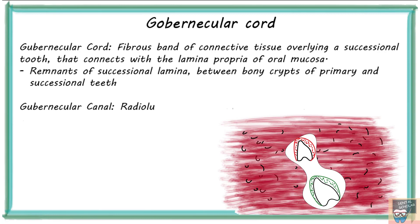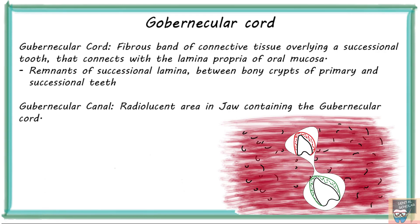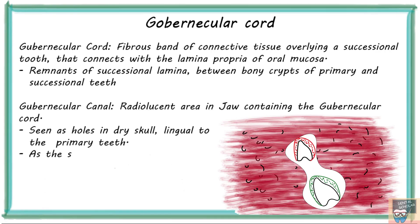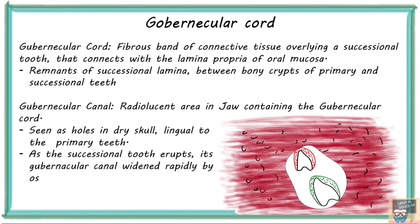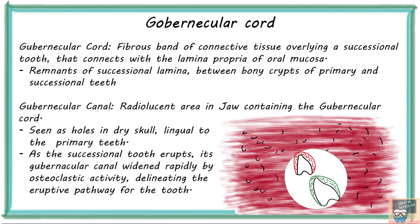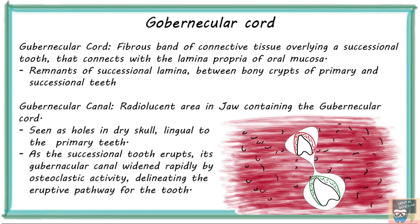The gubernicular canal is a radiolucent area in the jaw containing the gubernicular cord. It is seen as holes in dry skull lingual to the primary teeth. As the successional teeth erupt, its gubernicular canal widens rapidly by osteoclastic activity, delineating the eruptive pathway for the tooth. Thus it aids in eruption of successional teeth by providing a path of least resistance.